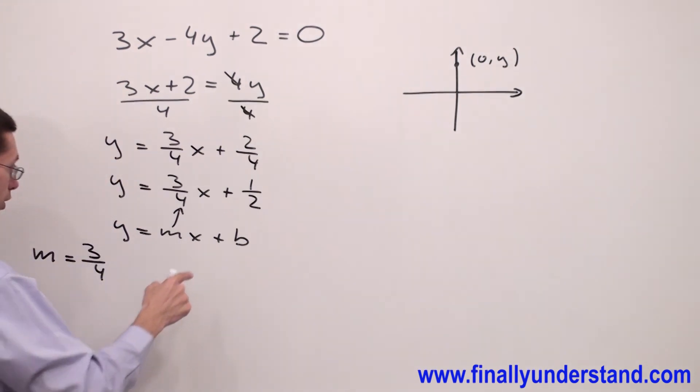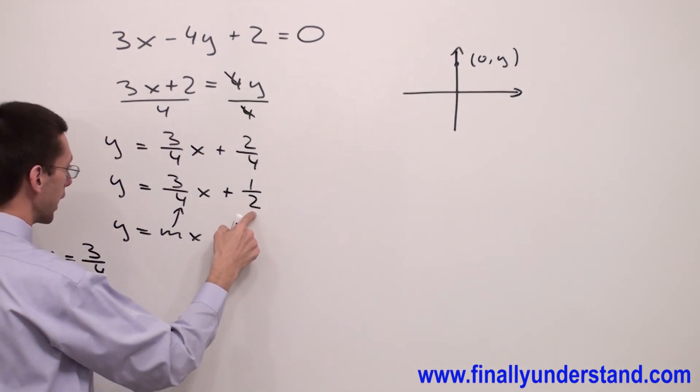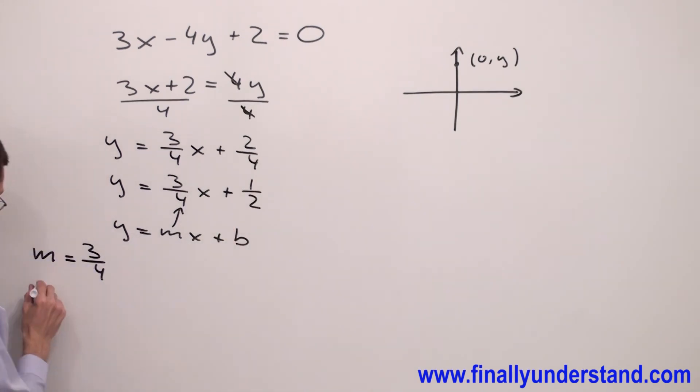And in this equation, b represents my y-intercept, so the y-intercept equals one-half. In other words, we're talking about the point which has coordinates (0, 1/2), and this is the solution to my problem.